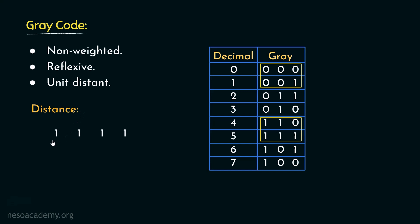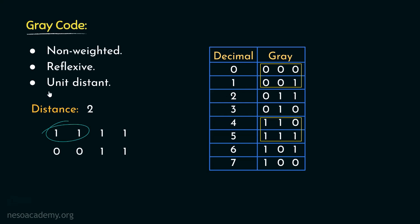This concept is known as distance. If we have two different patterns, say 1 1 0 0 and 0 0 1 1, to convert one to the other we must toggle two bits, so the distance between them is two. However, in gray code the distance is always unit or one, and that is why gray is called unit distant.